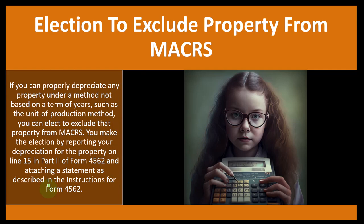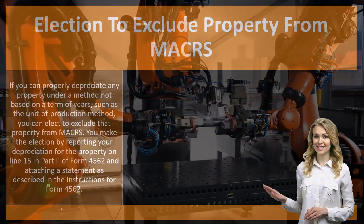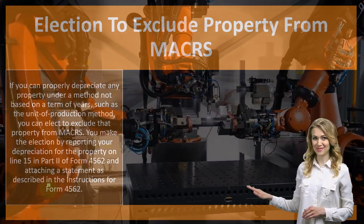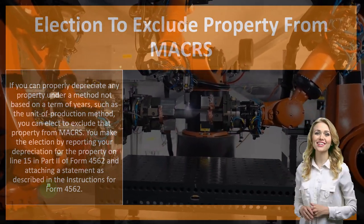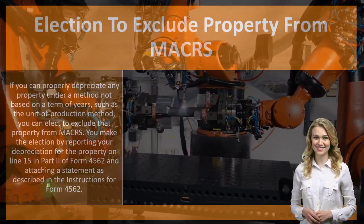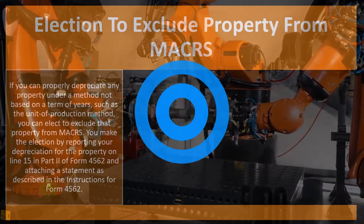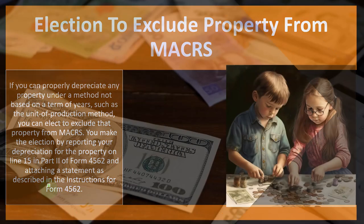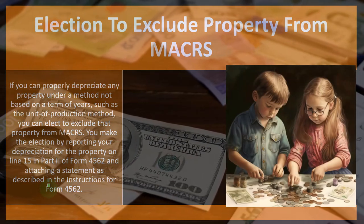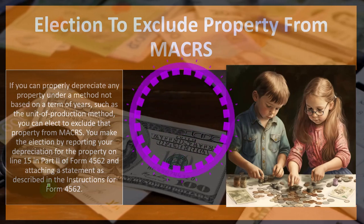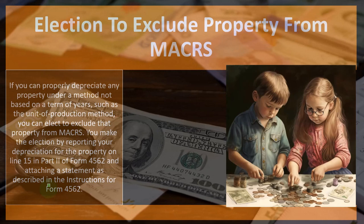Now we're thinking about the election to exclude property from MACRS. You might have machinery, equipment, or furniture you're putting on the books. Usually you would use MACRS depreciation, which is a type of accelerated depreciation — a double declining balance system. In other words, it's similar to straight-line but we're taking more depreciation up front in the early years.